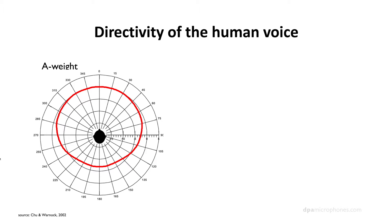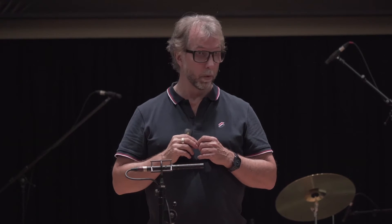The human voice has what we call directivity, or a radiation pattern. Directivity is normally referred to as microphone directivity — how is the pickup pattern of a microphone. But if you turn it around, what's the directivity of a sound source? A trumpet has a lot of sound coming towards the front, almost only. A drum in a marching band has sound coming all over the place. The voice, we have sound coming mainly in front of us.